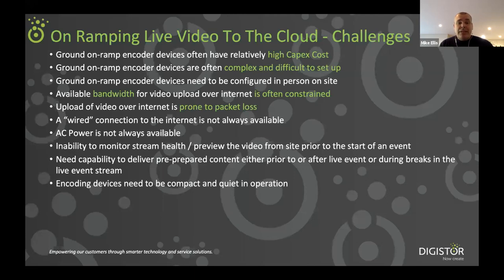Encoding devices for on-prem use need to be compact and quiet in operation. It's no good having something with a screamingly loud fan noise at your live event; you want a device that can sit discreetly at the back of the room. You may also want to add graphics. To create a really compelling live event where you're overlaying speaker names or sports results, it can be really desirable to deliver dynamically live-updating graphics as part of your live event. That can be complex and we'll talk about how we can simplify that.